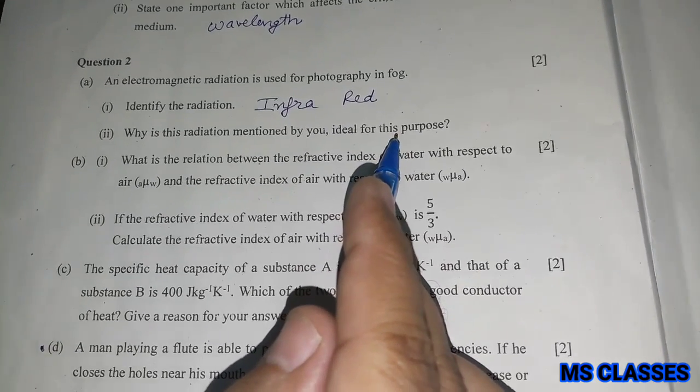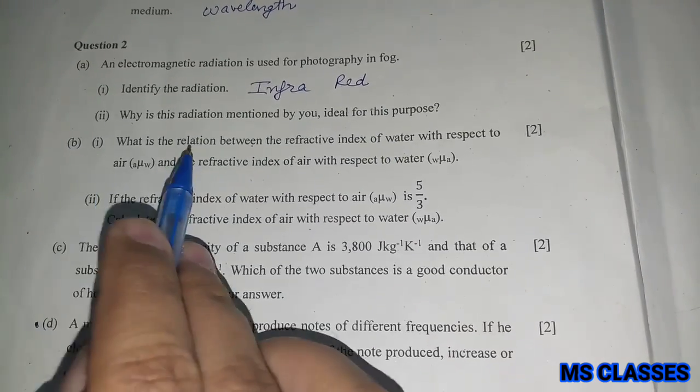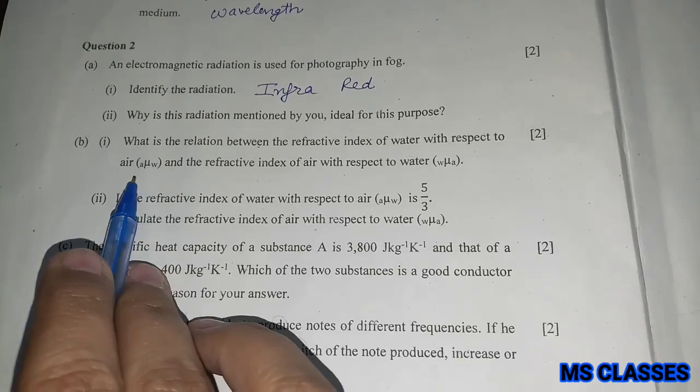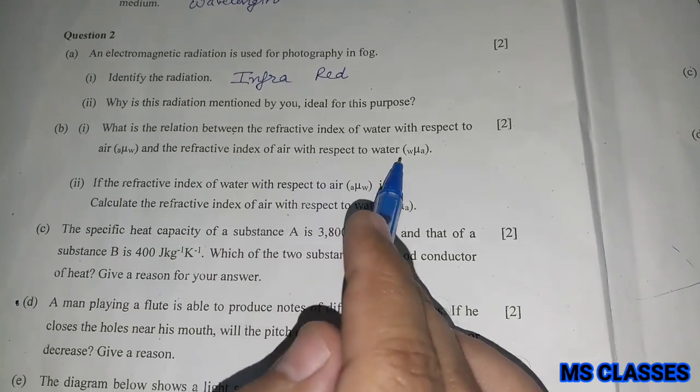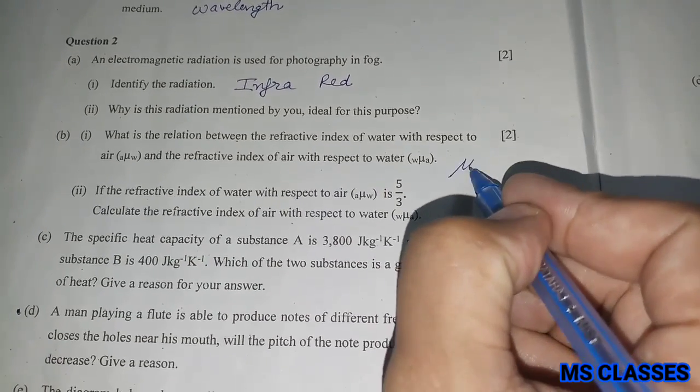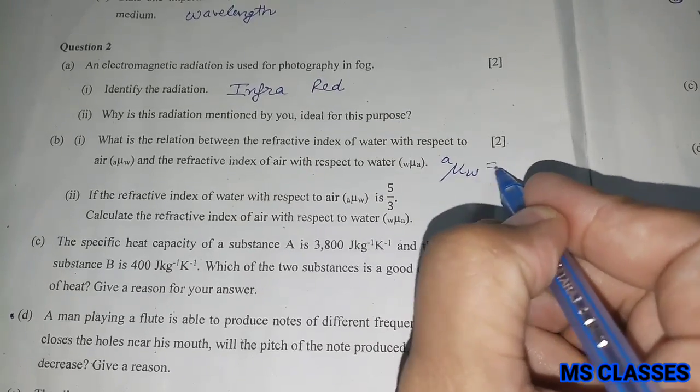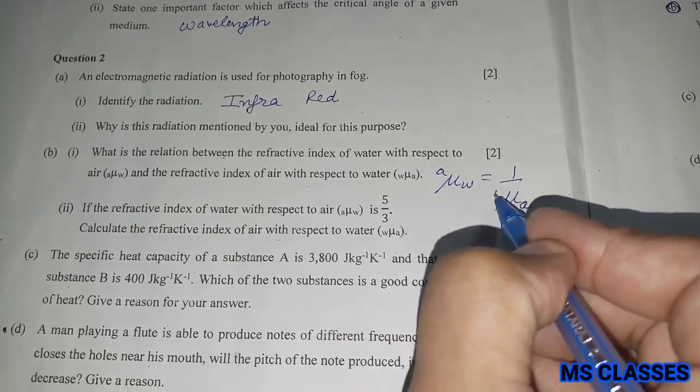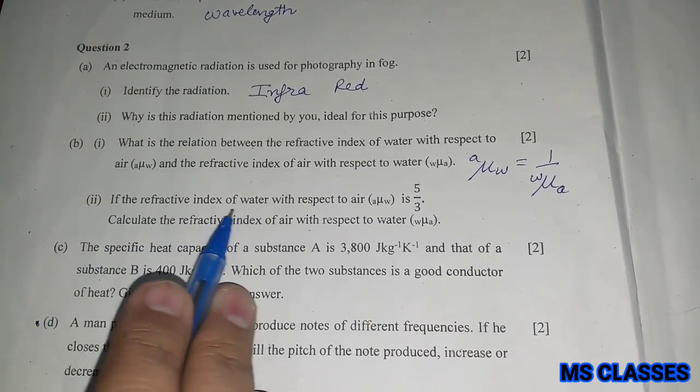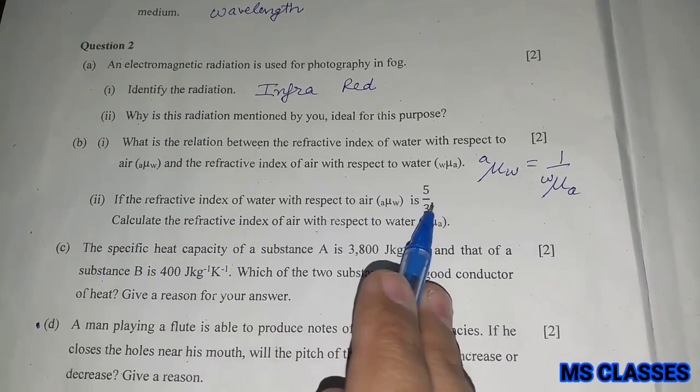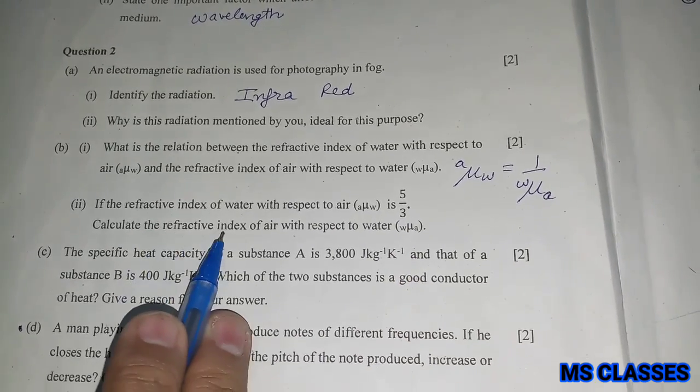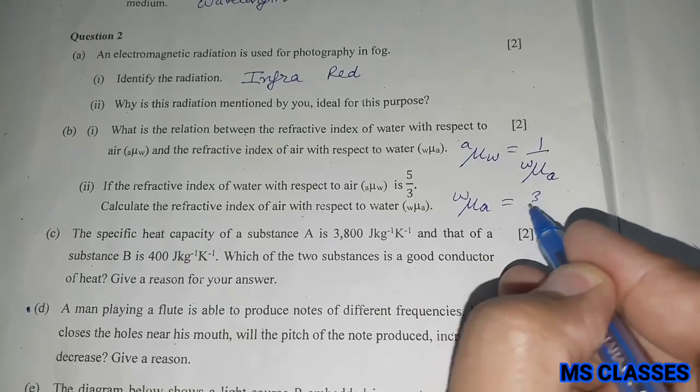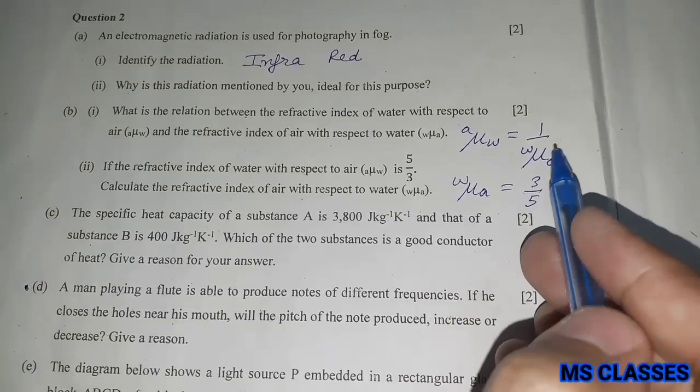What is the relation between the refractive index of water with respect to air and the refractive index of air with respect to water? The relation is this is reciprocal of the refractive index of air with respect to water. If the refractive index of water with respect to air is 5 by 3, calculate the refractive index of air with respect to water. That will be 3 by 5, followed by this relation.